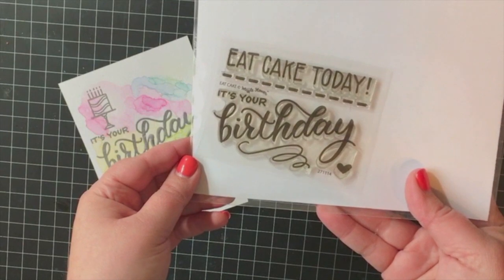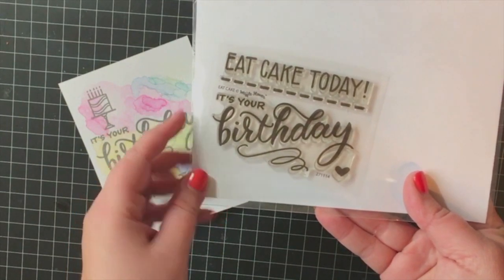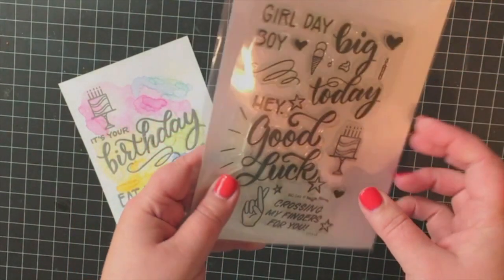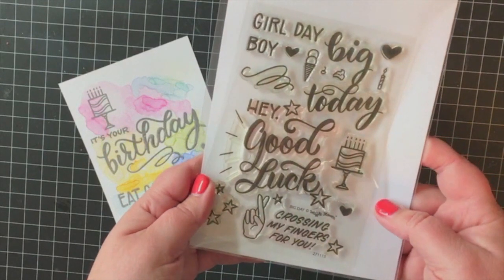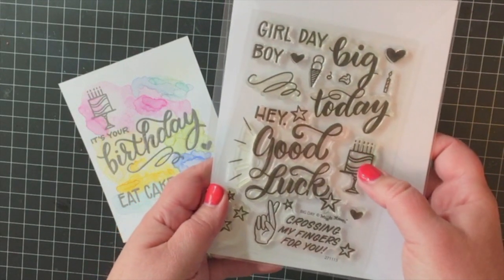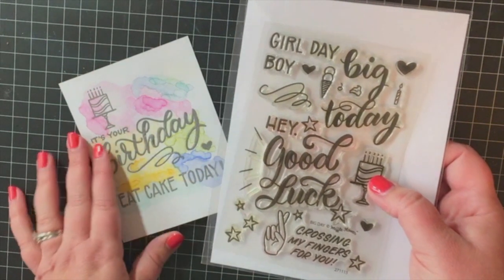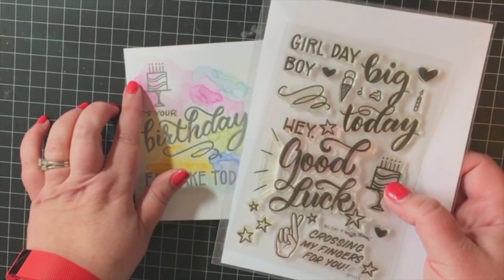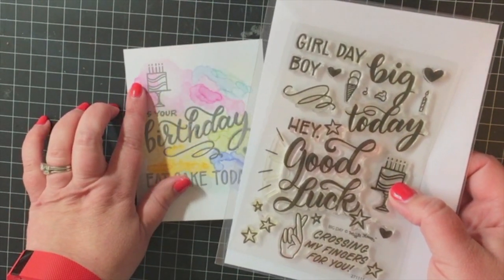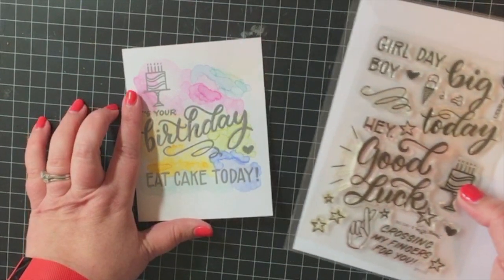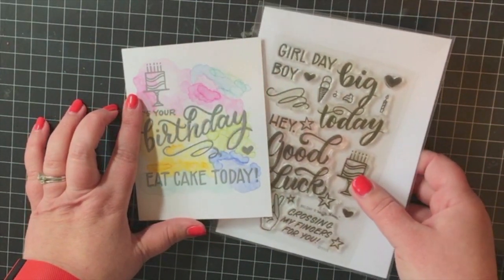The small cake image that I added just above the It's Your Birthday comes from the Big Day stamp set. I included that because I'm going to be using that cake image and those candles to be the anchor for my light-up element.